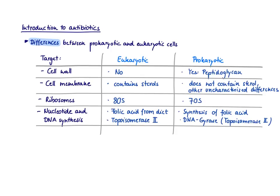Another very good target is nucleotide and DNA synthesis. When a cell divides, it first has to make nucleotides, and out of these nucleotides it can make DNA. There are slight differences here. To make nucleotides, you need folic acid. Eukaryotic cells can take folic acid from the diet, but bacteria cannot. Therefore, bacteria need to synthesize folic acid from scratch, and the enzymes responsible for making folic acid can be targeted because we don't have them.